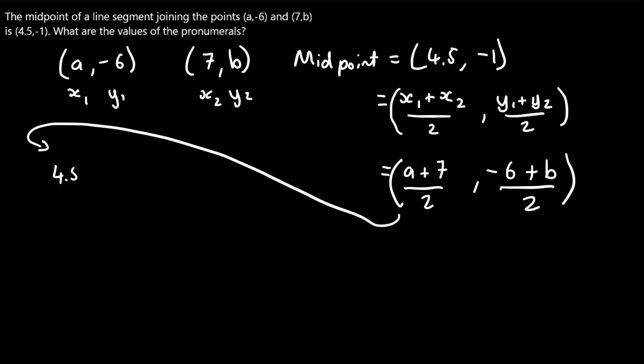So 4.5 equals (a + 7) over 2. This is a fairly simple algebraic rearranging problem. We want to get a by itself, so we get rid of the divide by 2 first — that's a stronger operation. Multiplying both sides by 2 gives us 9 equals a + 7. Now I've got to be careful because my 9s and as look really similar, so keep an eye out for that. Taking 7 from both sides gives us 2 equals a. So we've found our a value — it's 2.